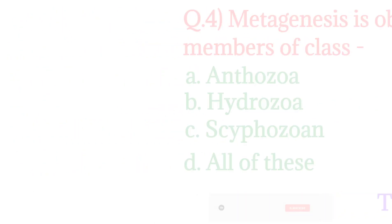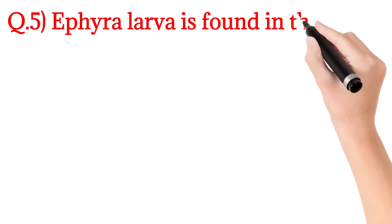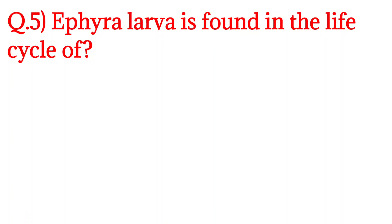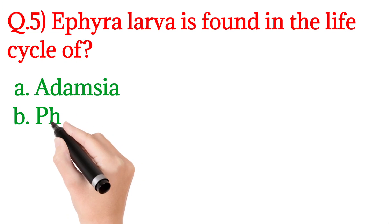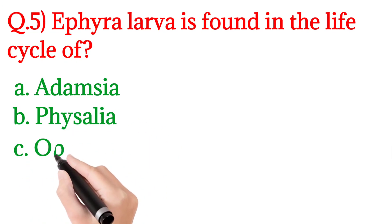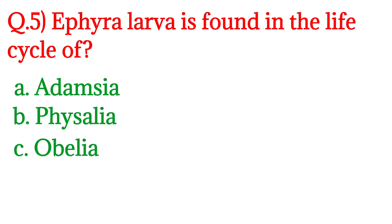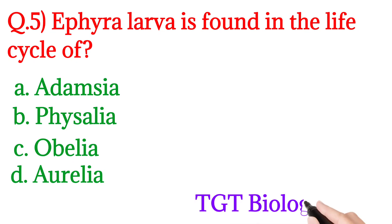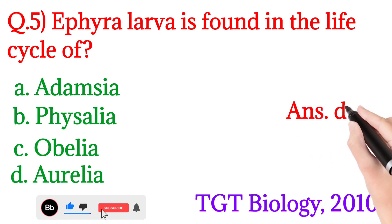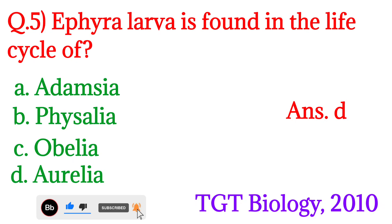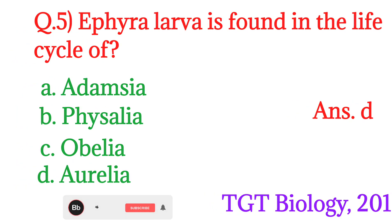Next question number 5: If ephyra larva is found in the life cycle of — ephyra larva किसके जीवन चक्र में पाया जाता है। Option A is Adamsia, Option B is Physalia, Option C is Obelia, and Option D is Aurelia. यह question TGT Biology 2010 में पूछा गया था। इसका answer होगा Option number D — Aurelia. Aurelia में ephyra larva पाया जाता है।